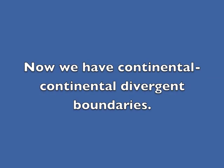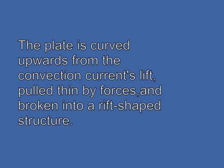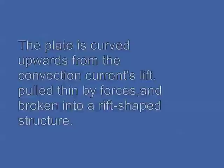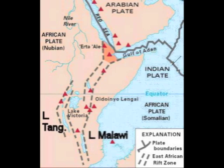Now we have continental-continental divergent boundaries. When a divergent boundary is beneath a continental plate, the pulling isn't strong enough to make a clean break through the plate. The plate is curved upwards from the convection current's lift, pulled thin by forces, and broken into a rift-shaped structure. As the two plates pull apart, faults develop on both sides of the rift and the central blocks lie downwards. Earthquakes occur as a result of this breaking and movement. An example would be the East African Rift near Malawi.